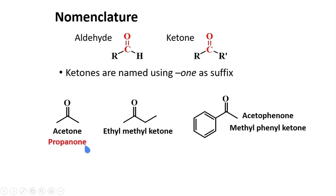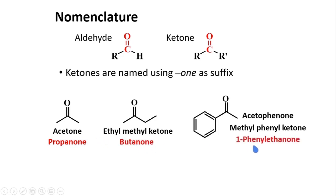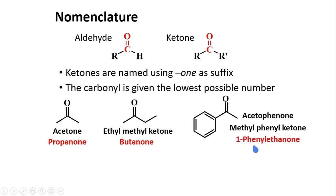In IUPAC, we use the name propanone — there are three carbons; we just change the '-e' in the alkane name to '-one,' so we get propanone. This one is butanone. And this one is called 1-phenyl-ethanone. The carbonyl is given the lowest possible number in cases where the location of the carbonyl group needs to be specified.